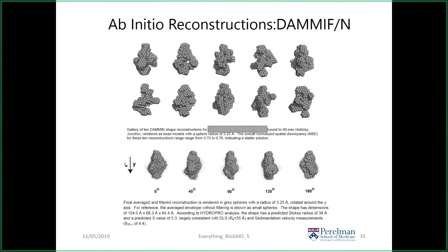DAMAVER produces two envelopes: DAMAVER, which is the averaging and decomposition of all reconstructions showing total volume, and DAMFILT, the final core 50% of that volume — the most stable region. Comparing these two envelopes is useful because a big discrepancy may imply a very unstable solution. Regarding how many calculations is enough: 10 to 15 is usually par for the course. If you're seeing sub-classes of solutions, some people go out to 30-40 and cluster the solutions. Beyond 20 generally gives diminishing returns.